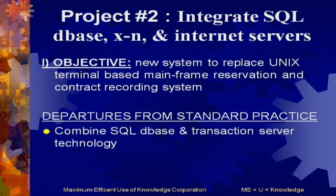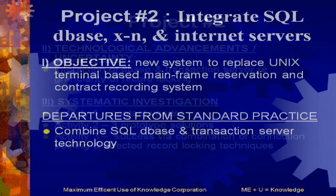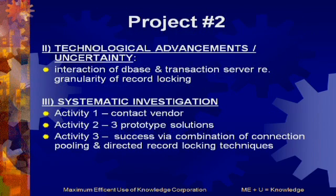Moving on to the 1999 project — it goes into a bit more depth. The 1994 example was intentionally generic so it would remain relevant from 1994 to 2014. Here we're talking about replacing an existing mainframe reservation system. The real technological problem was combining an SQL database with a transaction server — when first set up, the interaction between the database and transaction server resulted in record locking due to the granularity of the data.